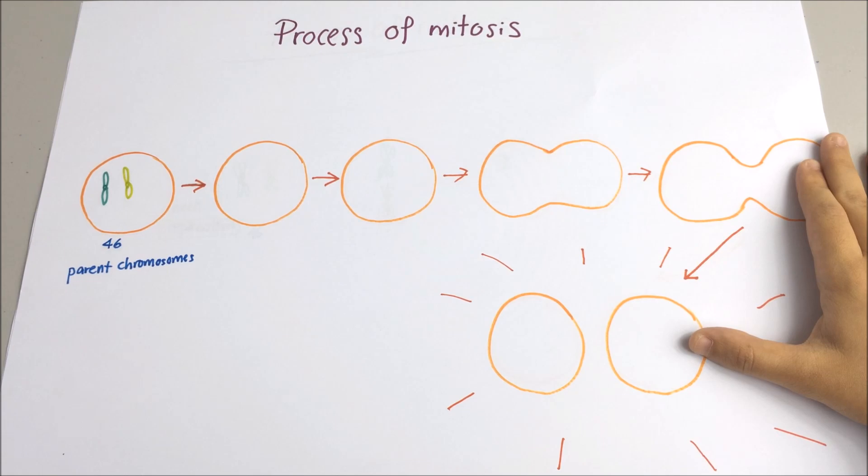Before the mitosis starts, each chromosome made a copy of themselves, which we call it as DNA replication.